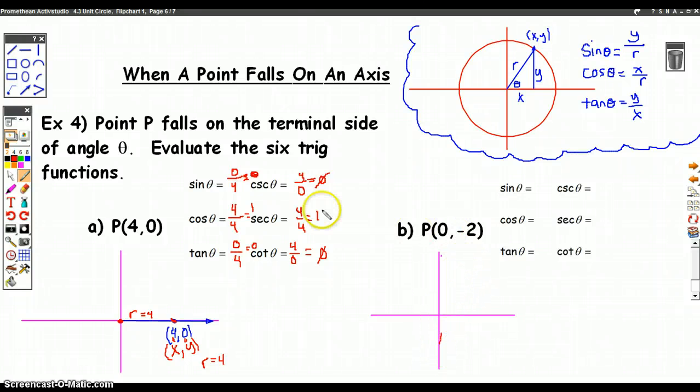For this one here, the point (0,-2) would bring me down really here. My terminal ray must have been facing that direction, and the point (0,-2) is on that terminal ray.